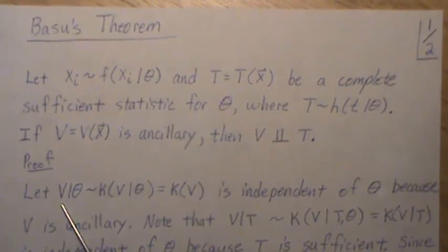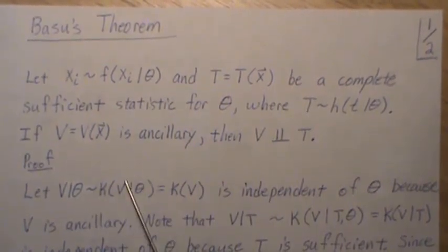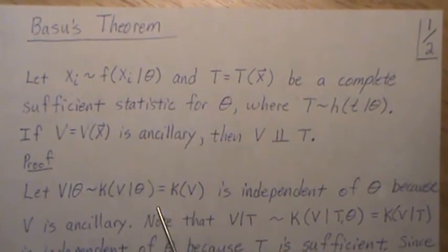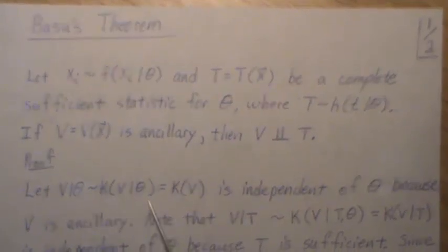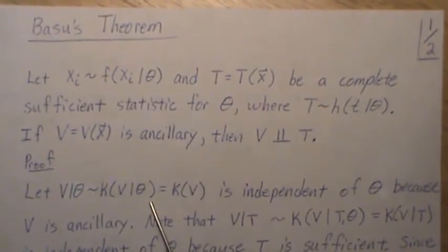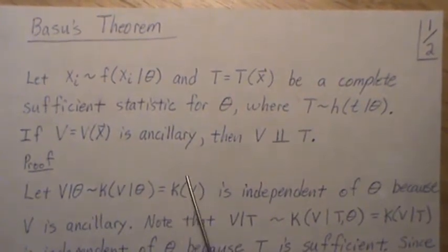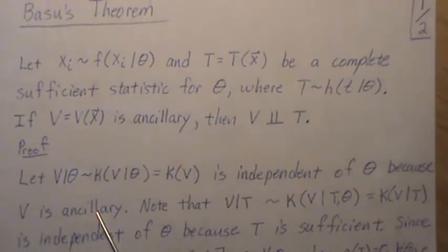So let's let v given t be distributed with some distribution k, so k of v, or v given theta. But we can just think of it as k of v. It's independent of theta because v is ancillary.